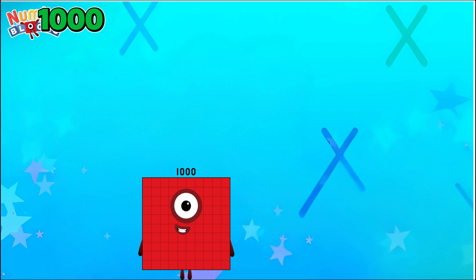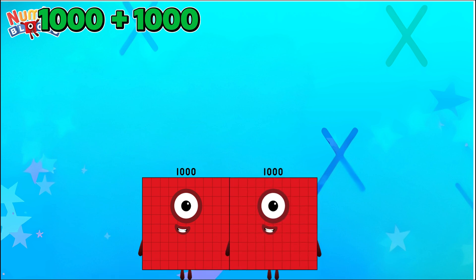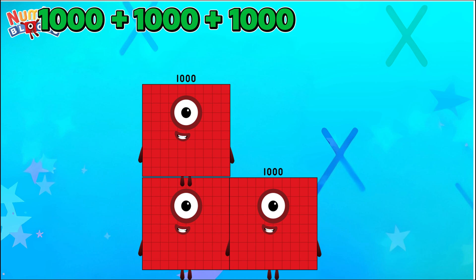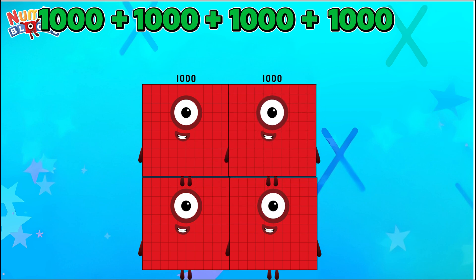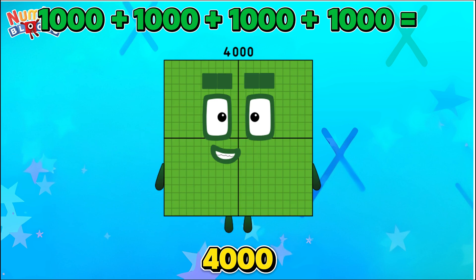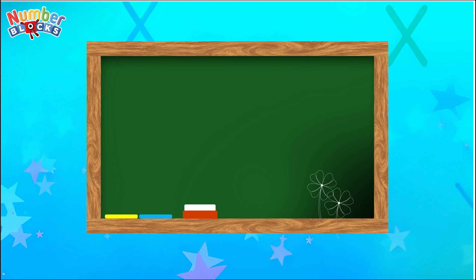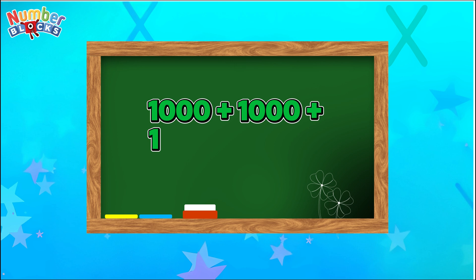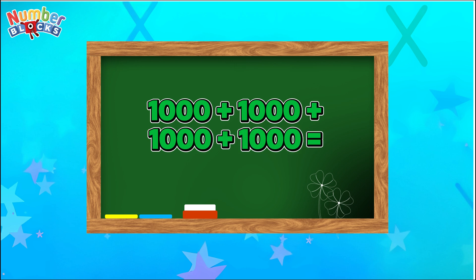1,000 plus 1,000 plus 1,000 plus 1,000 is equals to 4,000.